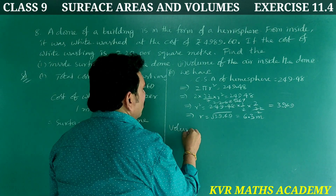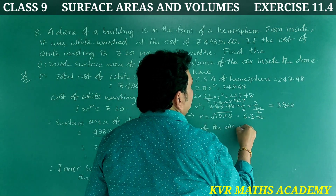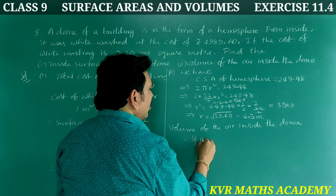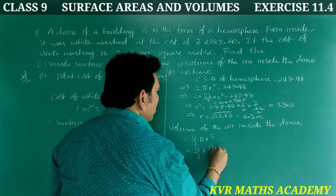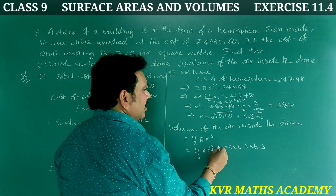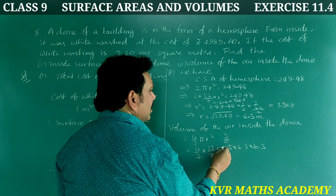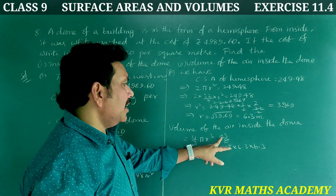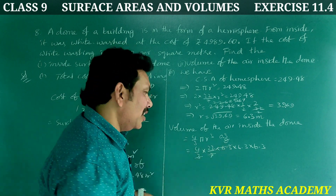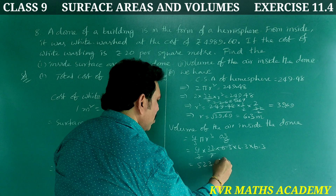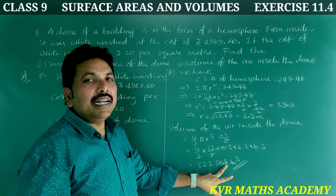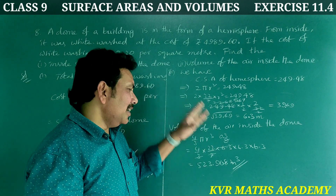Volume of air inside the dome = (2/3) π r³ = (2/3) × (22/7) × 6.3 × 6.3 × 6.3. Calculating: 6.3³ and multiplying through gives approximately 523.908 m³. So the volume of air inside the dome is 523.908 meter cube.